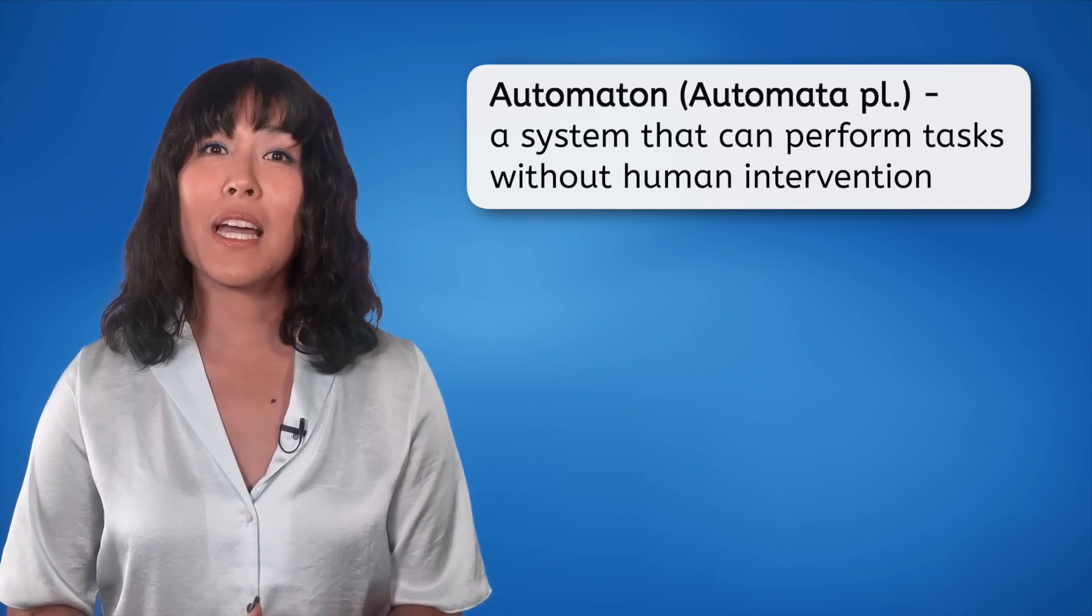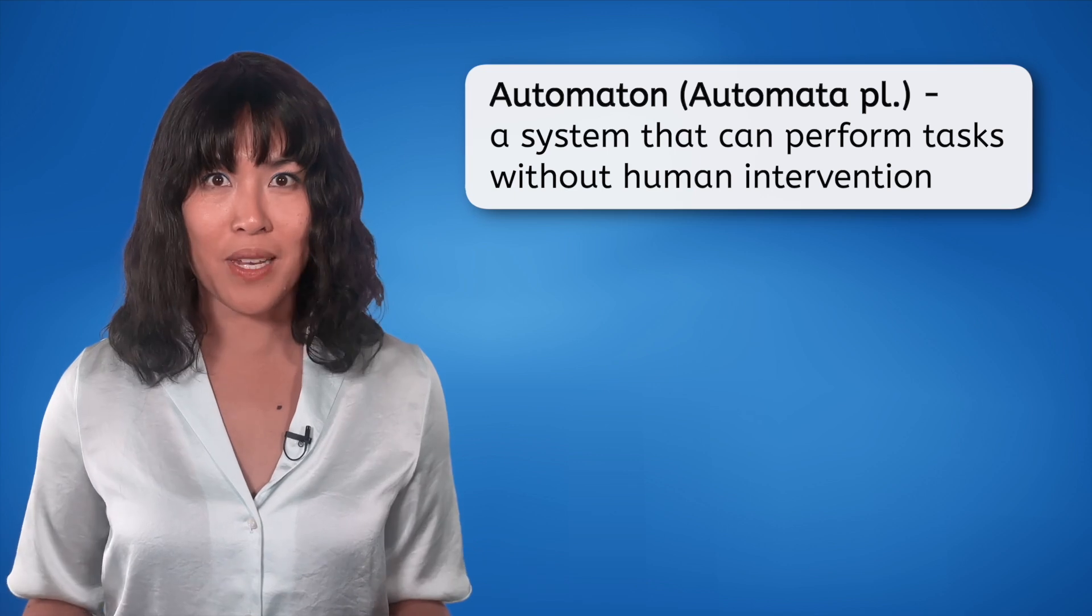An automaton is a system that can perform tasks without human intervention. Think of it like setting a clock. Once you wind it up, it ticks away on its own. Modern robots operate on a similar principle, but with advanced technology. To understand how to create a program that can be used to guide robots, we first need to grasp some core components of our automated system.